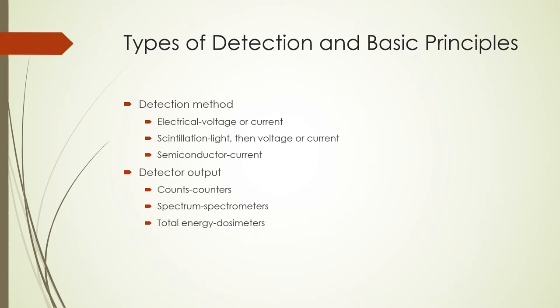Radiation detectors can be classified based on their detection method or the detection output. Electrical detection involves converting the radiation to either voltage or current. When a scintillator is used, the radiation is converted first to light, then to voltage or current. Semiconductor detectors usually convert radiation signals to current. At the output of the detector, the signal can be displayed in several ways. Detectors displaying counts are called counters, those displaying a spectrum are called spectrometers, and those displaying total energy are called dosimeters.